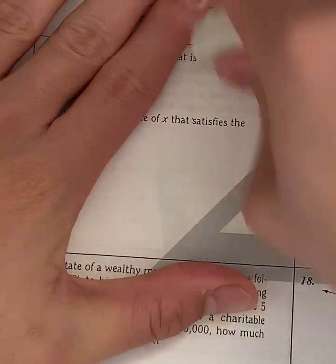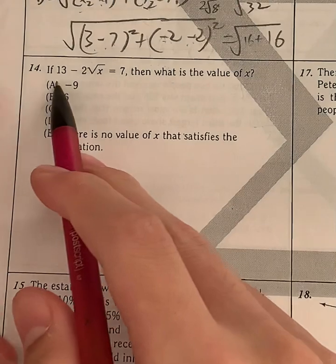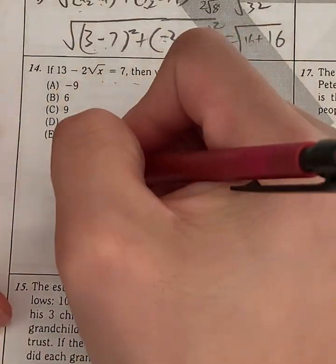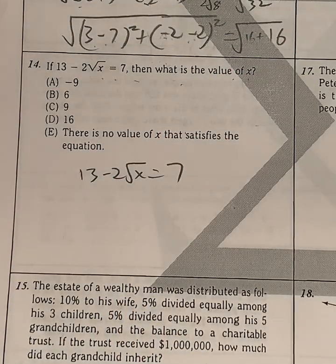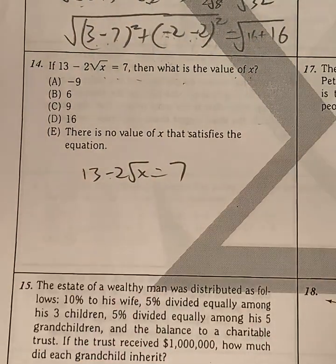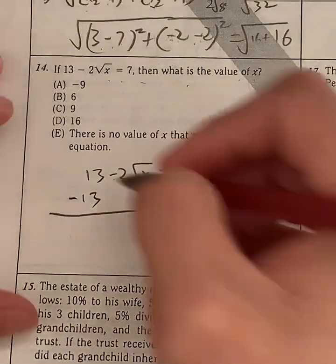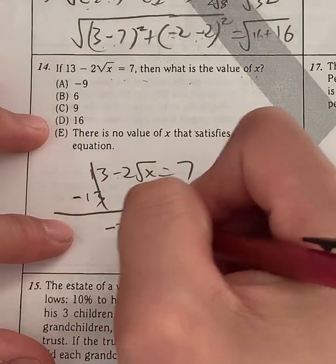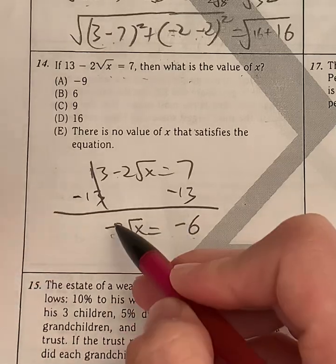Moving on. We have question 14. If 13 - 2√x = 7, what's the value of x? So this is just a simple equation that we need to solve. Let's move everything without x onto the other side. In this case, it's going to be negative 13 because it doesn't have x tied to it. 13 minus 13 cancels out, giving us -2√x = 7 - 13, which is -6. Negative negative on both sides, cancel that out, giving us 2√x = 6.